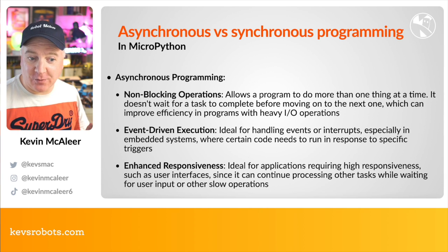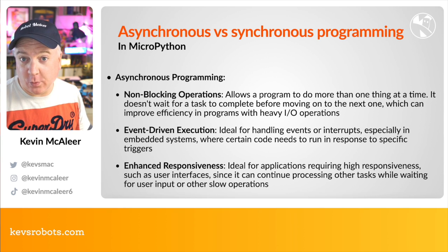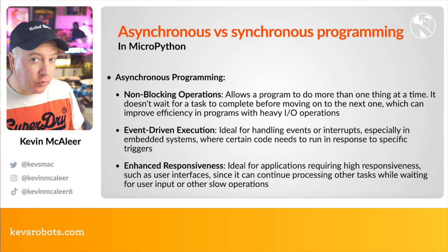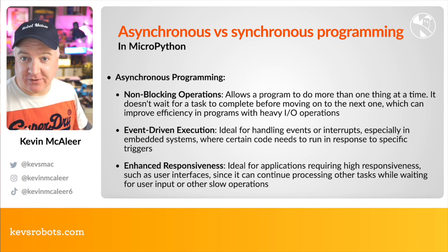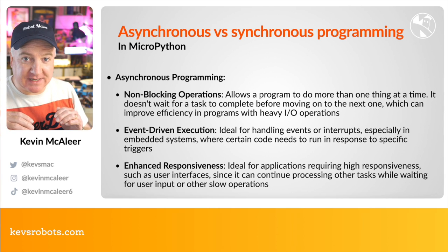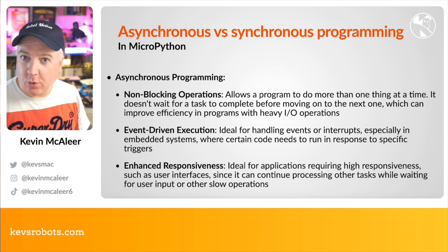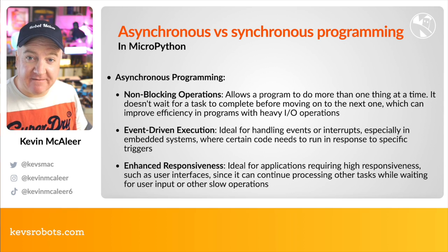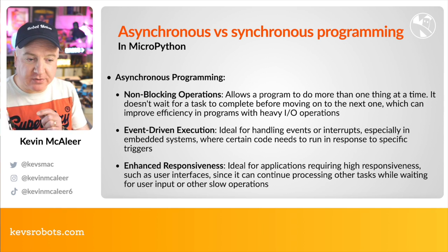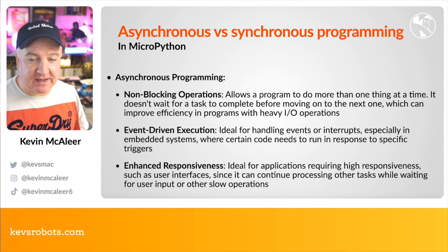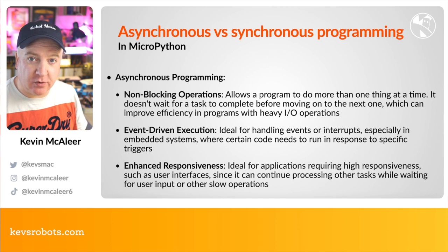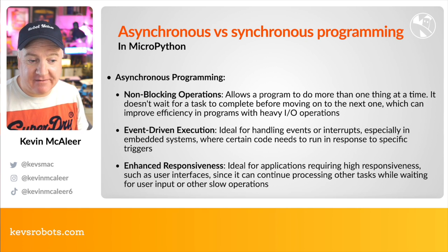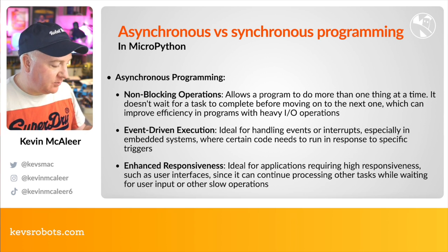Asynchronous programming is more complicated. It allows a program to do more than one thing at once — it's multitasking. The MicroPython kernel can start and stop tasks depending on their status, making it more of a cooperative multitasking than true multitasking. It doesn't wait for a task to complete before moving on, which improves efficiency, particularly when waiting for input/output. It's also designed for event-driven execution — ideal for handling interrupts and events in embedded systems where code responds to a specific trigger.